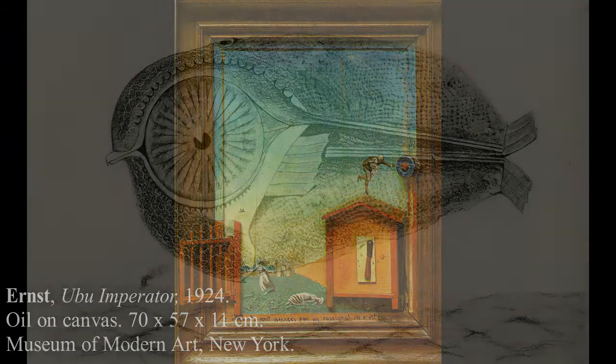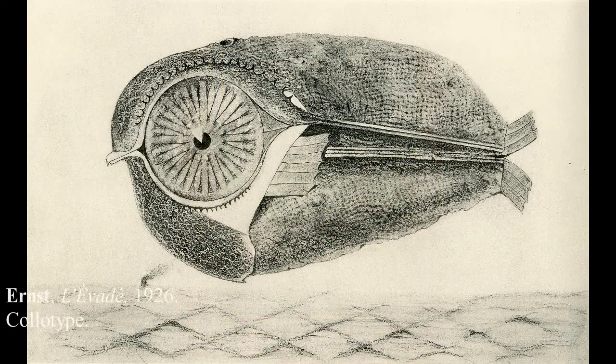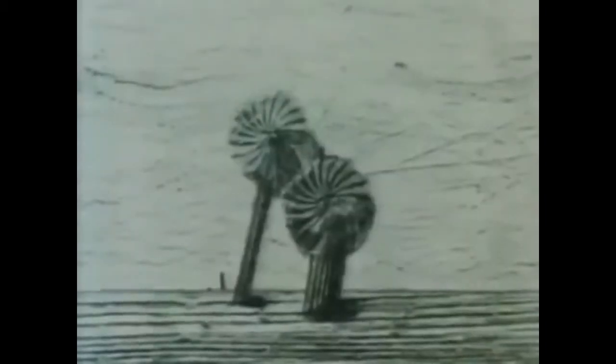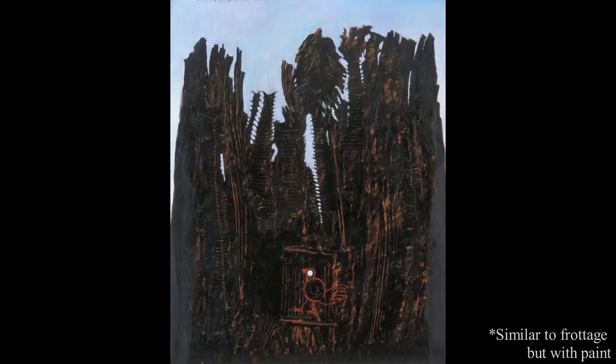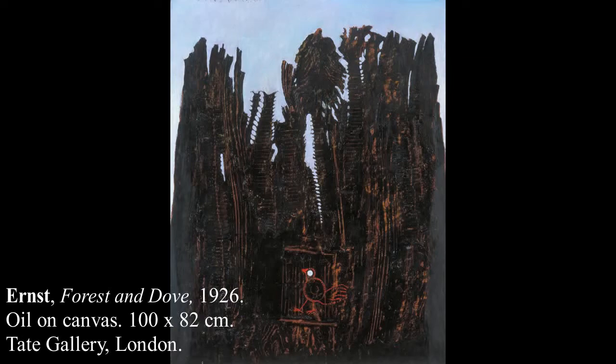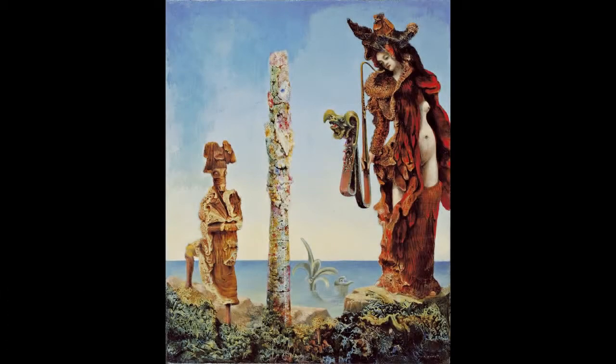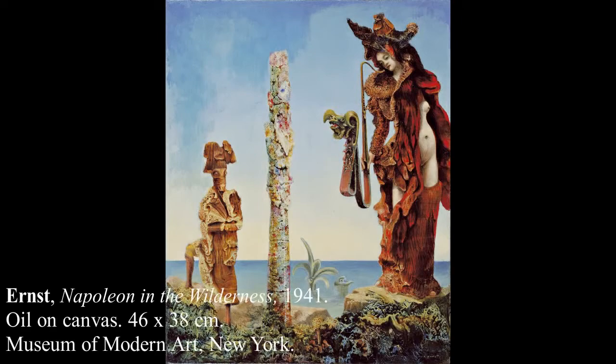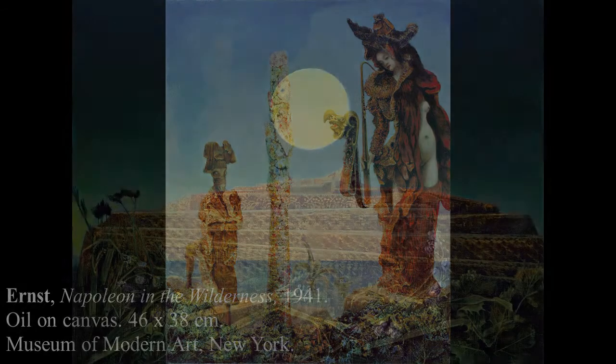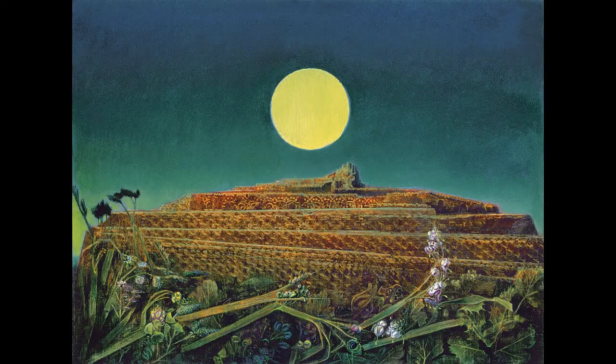He pioneered a style of painting called Frottage, where pencils or pastels are rubbed over an uneven surface. Ernst described it: "Raining day in a seaside inn found me gazing at the floorboards of my room. My gaze became excited, then obsessed by the sight of the boards, where a thousand rubbings had deepened the grooves. I decided then to investigate the meaning of this obsession." Along with Frottage, there was Grattage, which is paint being rubbed across a surface to reveal an outline of an object underneath. These techniques would give Ernst's works odd textures, bizarre figures, and color palettes, similar to the Surrealism movement, but created through different techniques.